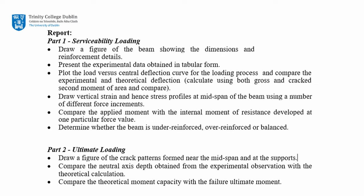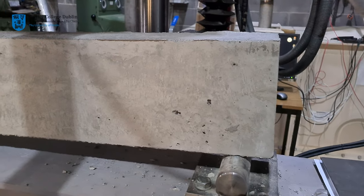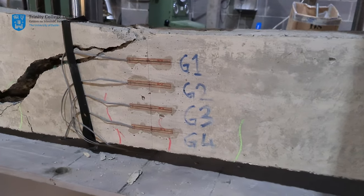Part 2 — Ultimate Loading: draw a figure of the crack patterns formed near mid-span and at the beam supports; compare the neutral axis depth obtained from experimental observation with theoretical calculations; and compare the theoretical moment capacity with the failure ultimate moment. The following data and equations, which are also included in the handout, may help you in completing your report. Thank you for watching this video and best of luck in submitting your report.